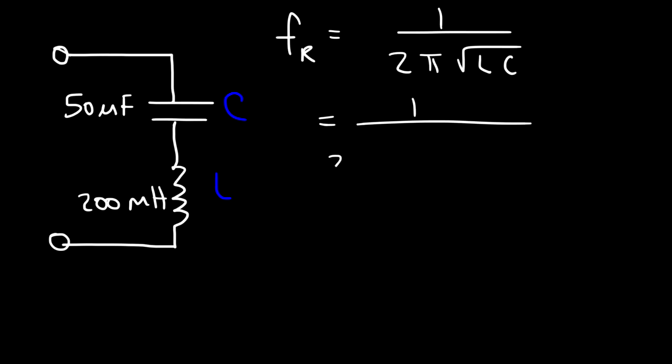In this example, L is 200 millihenries which is 200 times 10 to the minus 3 or simply 0.2. C is 50 microfarads, and micro is 10 to the minus 6.